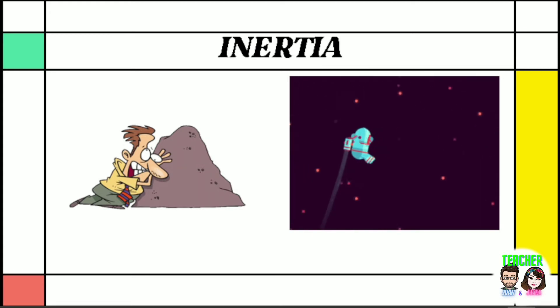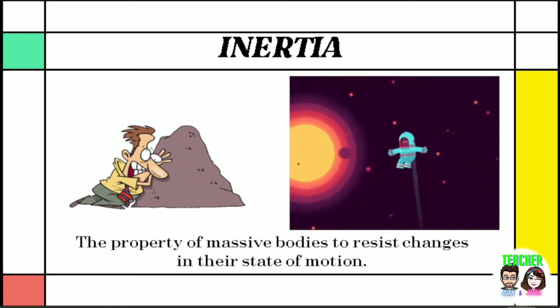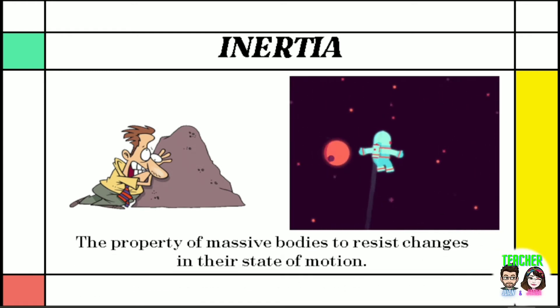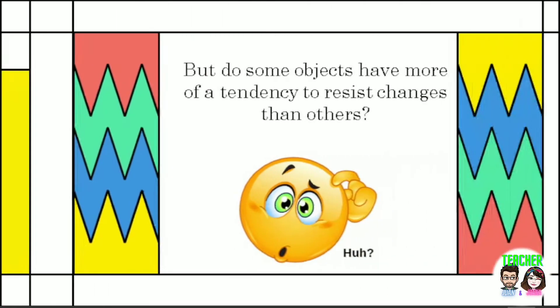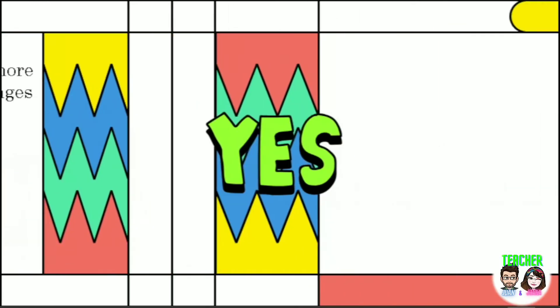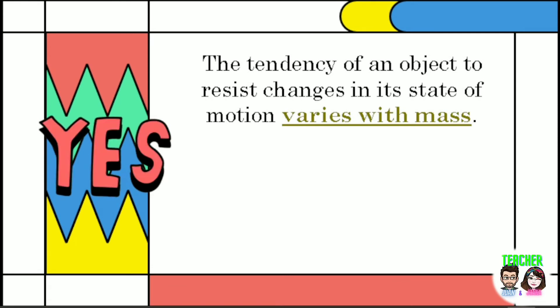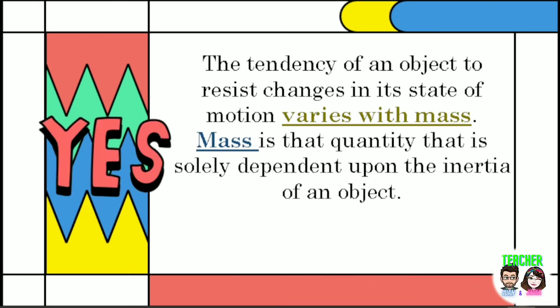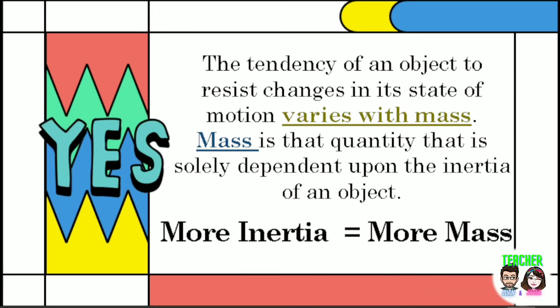Inertia, the property of massive bodies to resist changes in their state of motion. All objects resist changes in their state of motion. All objects have this tendency, they have inertia. But do some objects have more of a tendency to resist changes than others? Absolutely yes. The tendency of an object to resist changes in its state of motion varies with mass. Mass is that quantity that is solely dependent upon the inertia of an object. The more inertia that an object has, the more mass that it has. A more massive object has a greater tendency to resist changes in its state of motion.